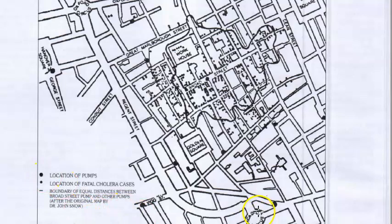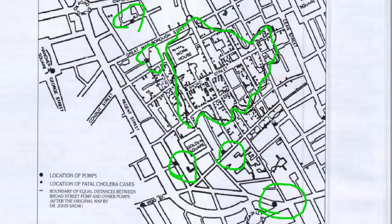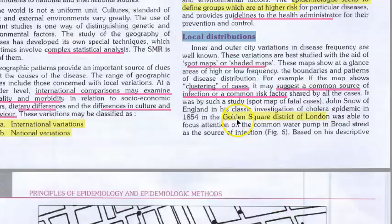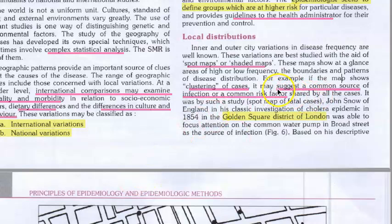Can you locate a pump here? Location of pumps and location of fatal cholera cases are marked. The line indicates the boundary of equal distances between the Broad Street pump and other pumps, identifying the common water pump on Broad Street as a source of infection. This map shows clustering of cases and a common source of infection or common risk factor.